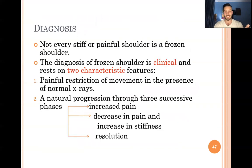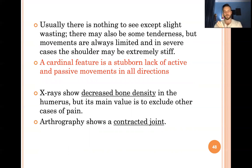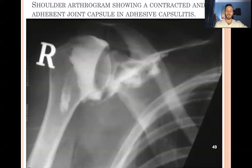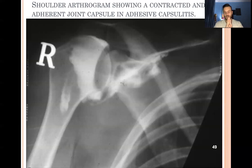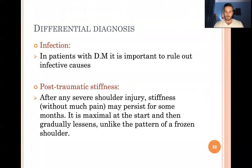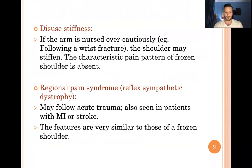The course takes about 18 months. Diagnosis of frozen shoulder (adhesive capsulitis): X-ray is normal, the shoulder is painful then stiff in all directions — flexion, extension, abduction, adduction, internal and external rotation. A cardinal feature is stubborn lack of both active and passive motion in all directions. Arthrography reveals that the dye injected into the joint capsule leaks out due to adhesion and capsular contraction, confirming the diagnosis. Differential includes infection, post-traumatic stiffness, and complex regional pain syndrome.